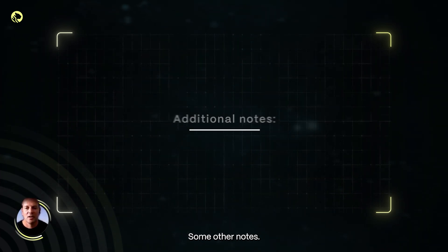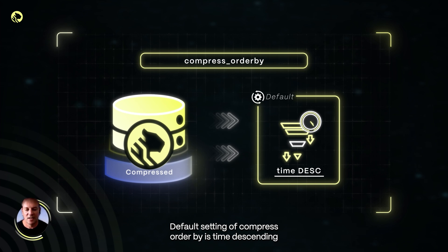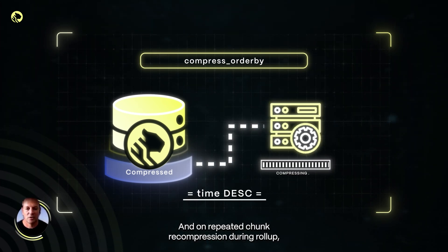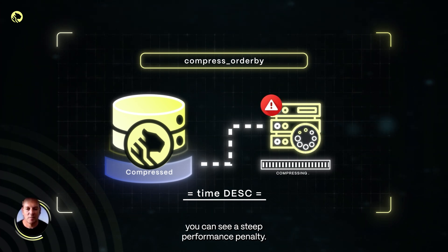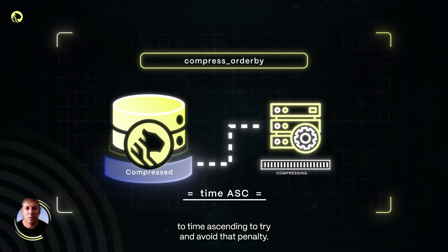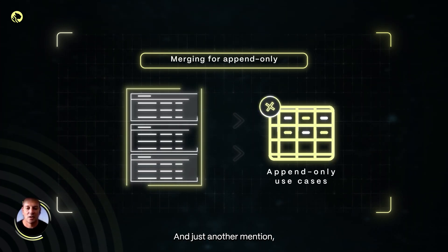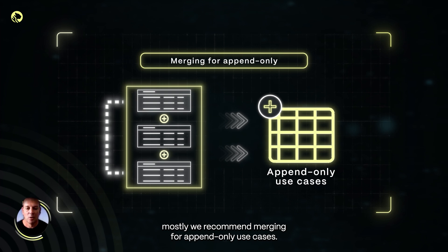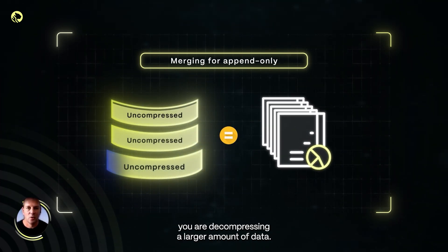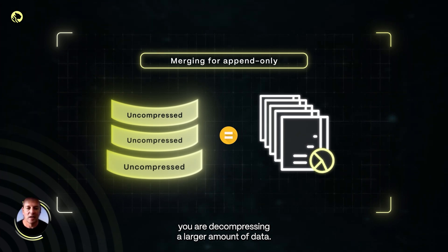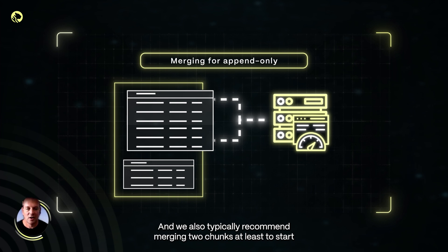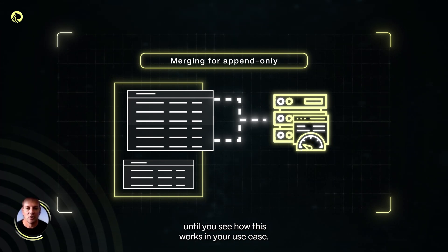Some other notes: the default setting of compress order by is time descending, as we talked about in part two, and on repeated chunk recompression during roll up, you can see a steep performance penalty. To get around that, you can set order by to time ascending to try and avoid that penalty. We mostly recommend merging for append-only use cases, because when you decompress, you are decompressing a larger amount of data. We also typically recommend merging two chunks at least to start, until you see how this works in your use case.